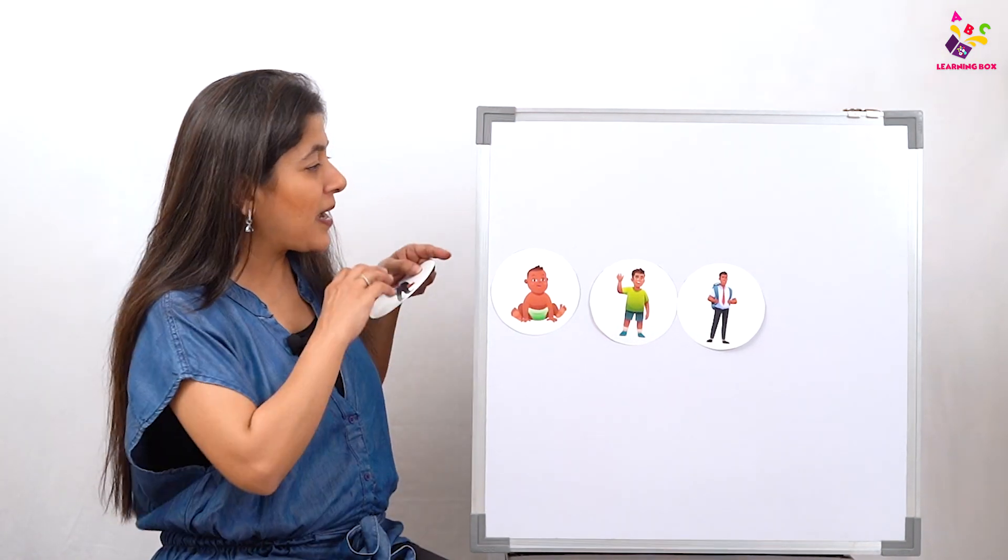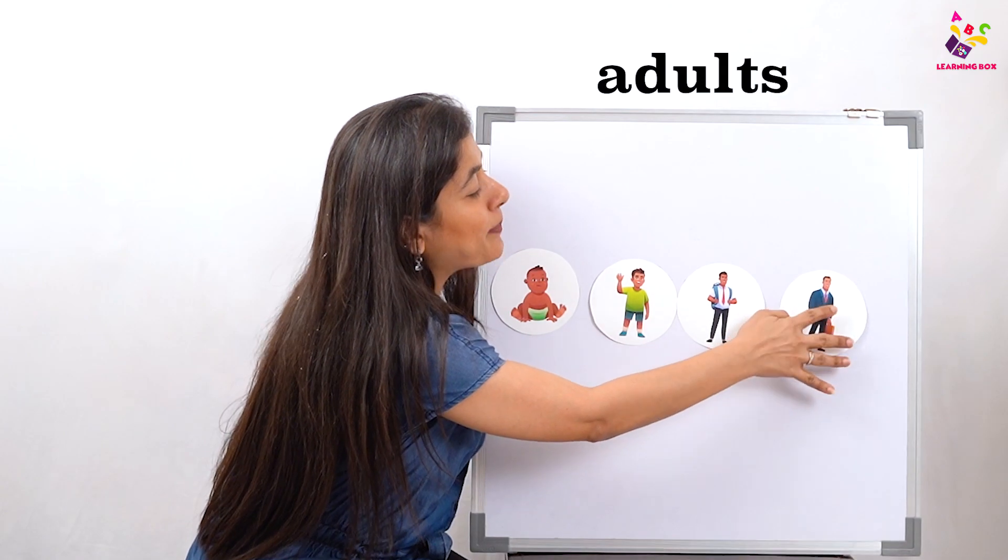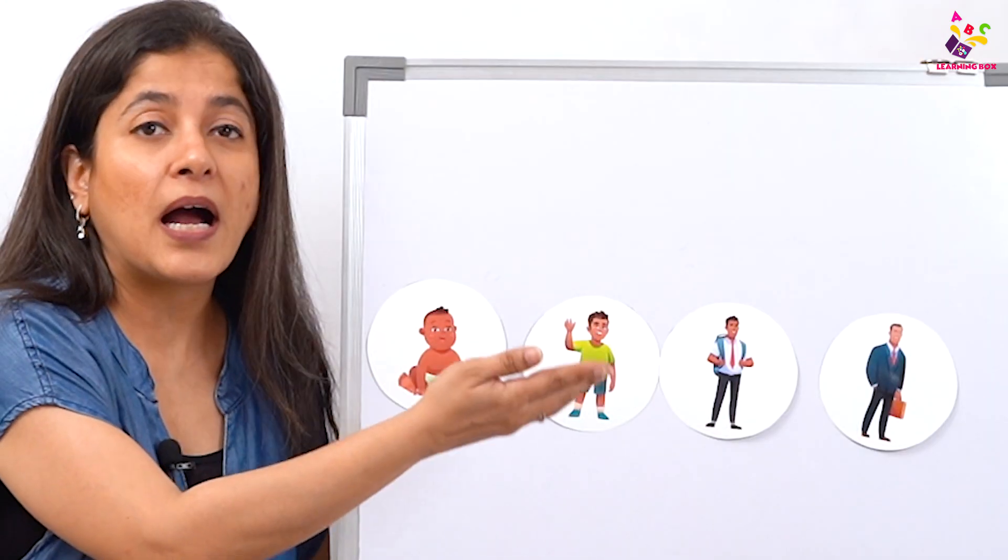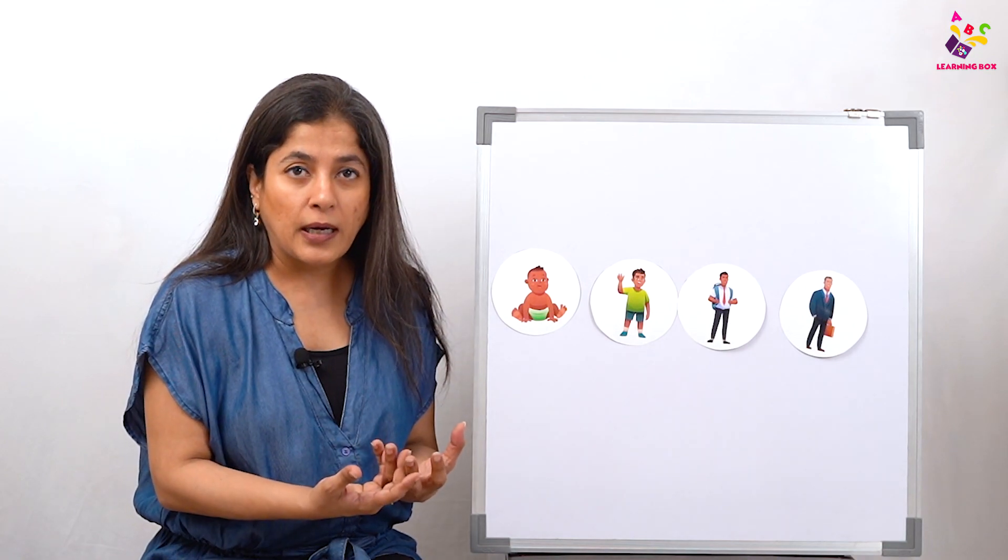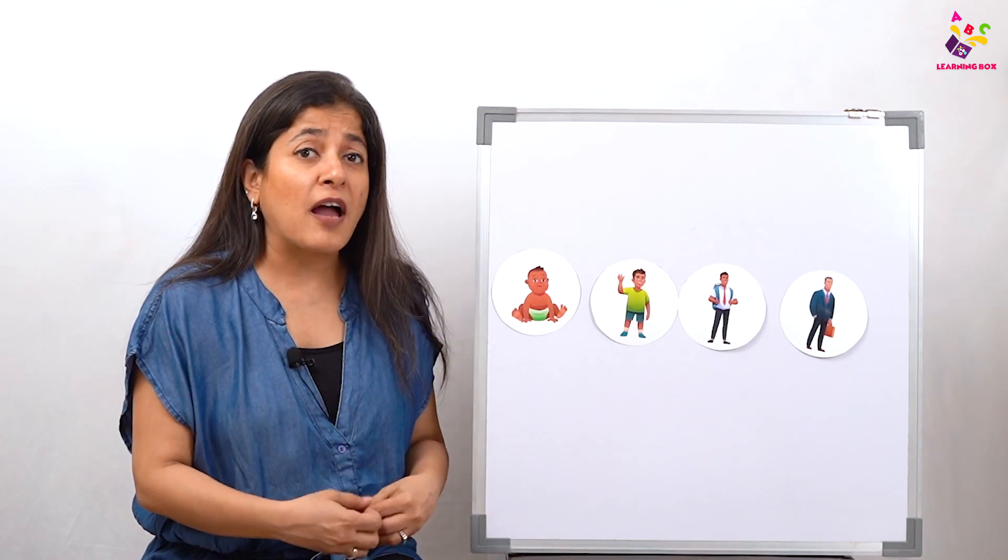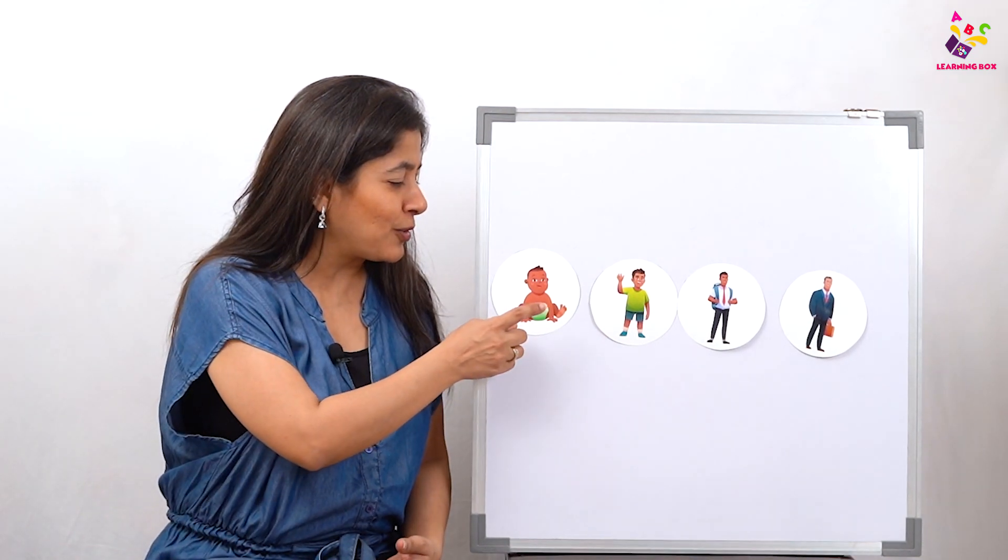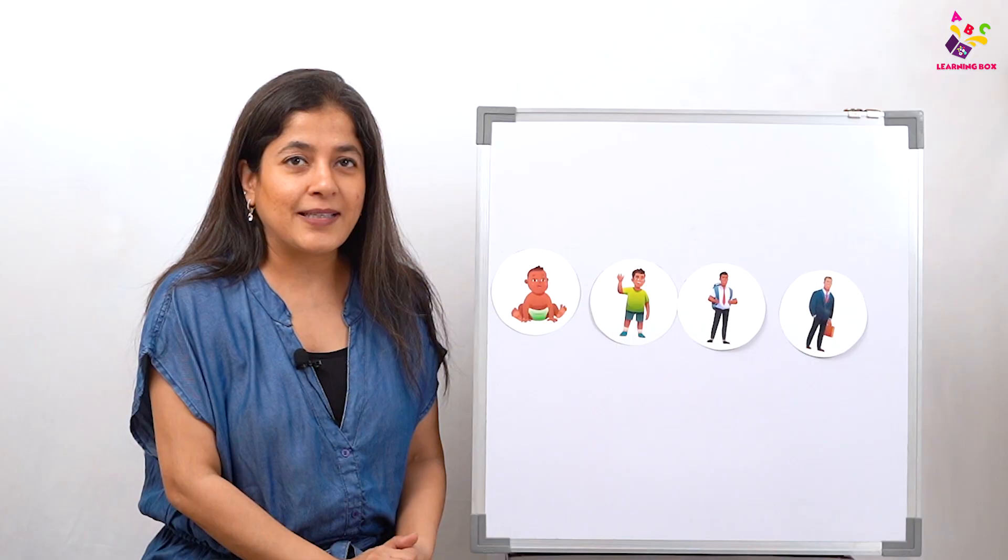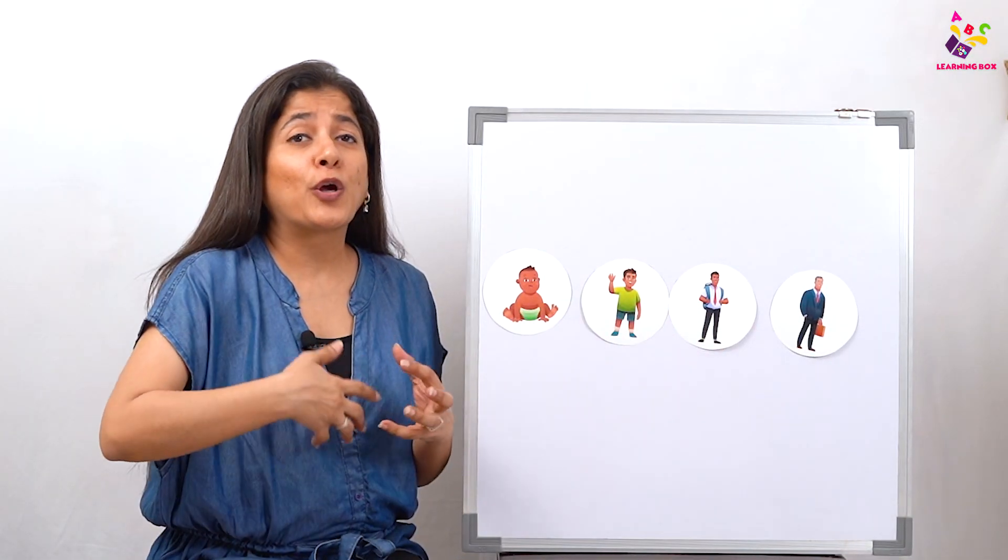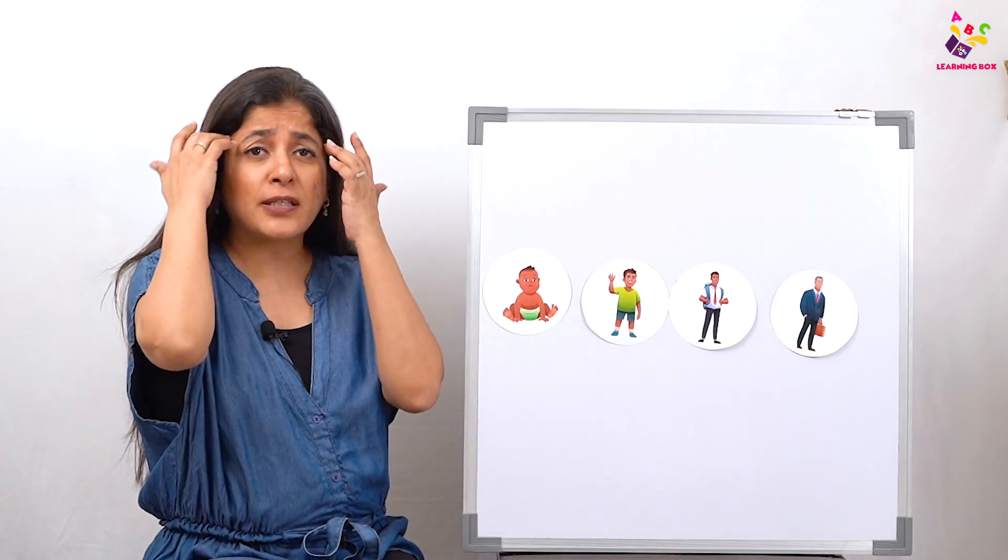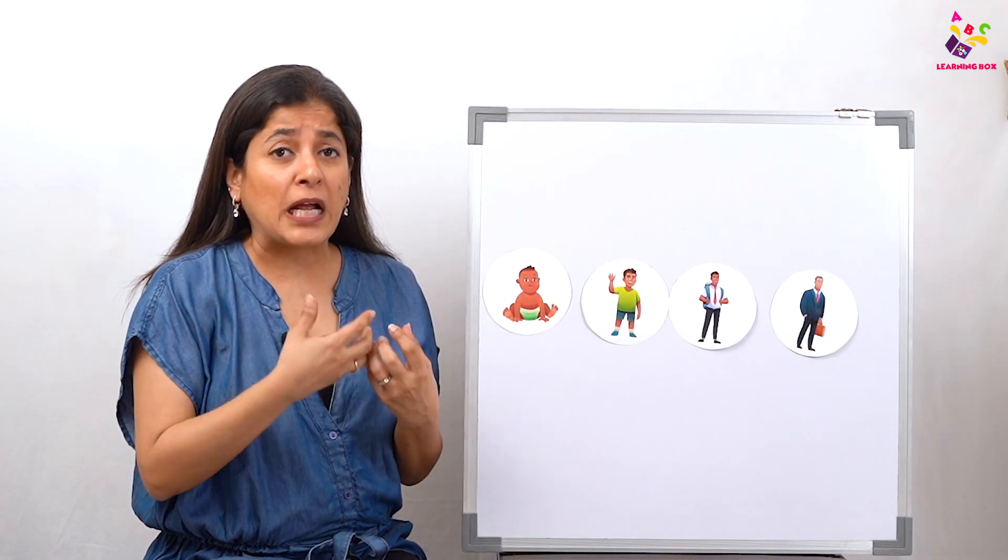When we are adults, we start going to work, we get married, we have our own babies—babies who then again turn into toddlers. When we are adults we grow older and older. Our hair starts going white, men start getting white beards.